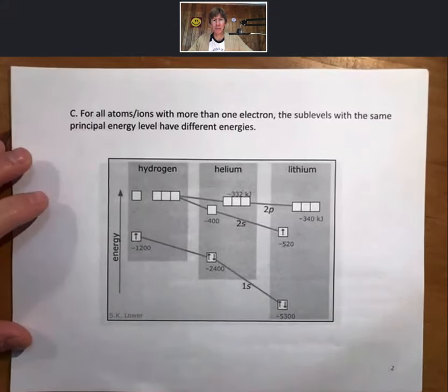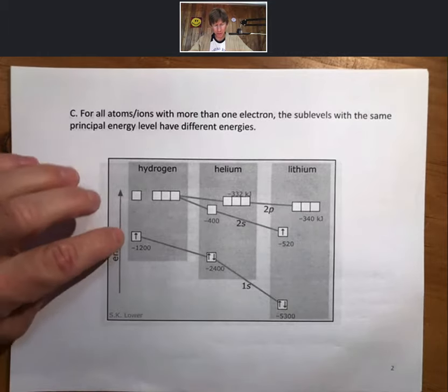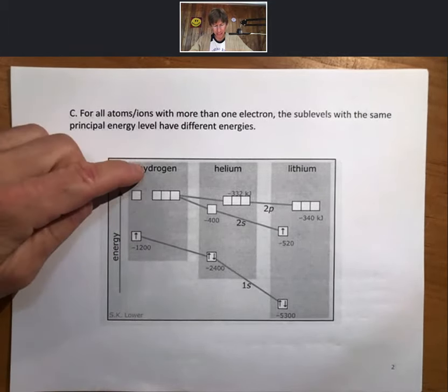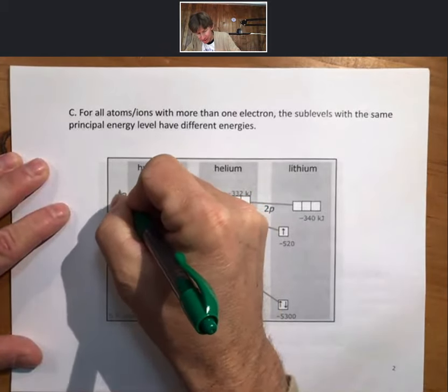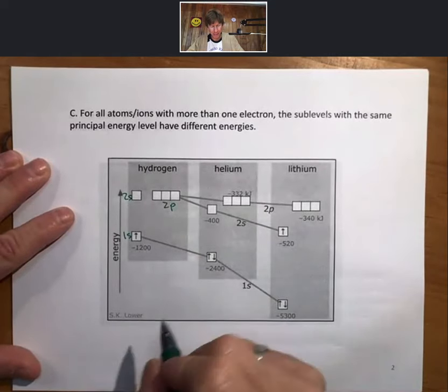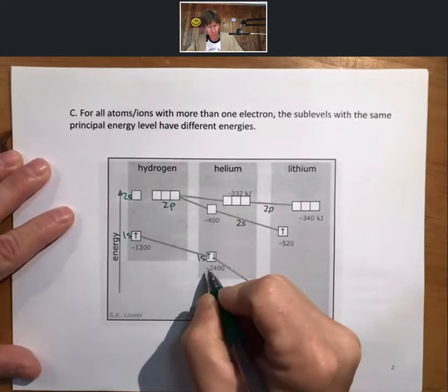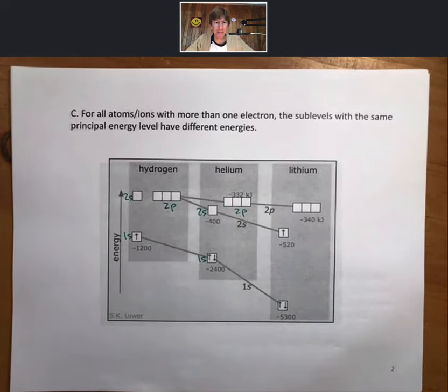For all atoms and ions with more than one electron, the sublevels with the same principal energy level have different energies. So now we're using boxes. And for hydrogen, this is going to be the 1s. This is going to be 2s and 2p. And again, these are all, 2s and 2p have the same energy. For helium, 1s, 2s, 2p have different energies with 2p being higher than 2s. And we don't have to know the relative energies. What we have to know is the order of the energy levels and how many orbitals are in each energy sublevel as well.